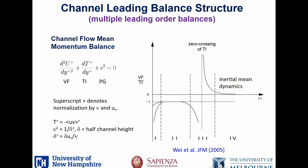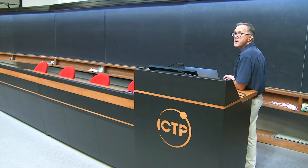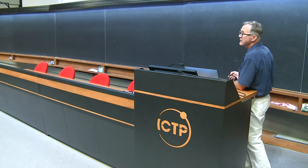I'll describe how we determine these leading order balances — and it's empirical. Any time we want to do an analysis of the mean equations of motion, we run into the closure problem. To address that, either you have to make some sort of hypothesis, make a guess, pose some assumption, or you have to use some level of empiricism. In this present approach, we use a level of empiricism right at the beginning where we determine the leading order balances. Once we have those leading order balances, everything else is just using the equations of motion and the boundary conditions. This is distinct from many other approaches.